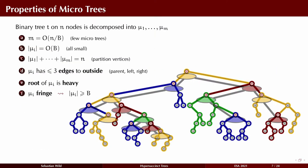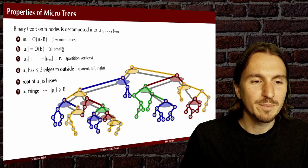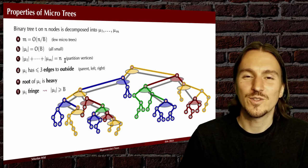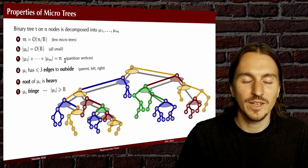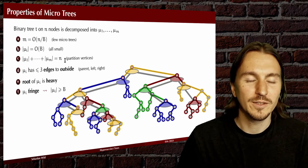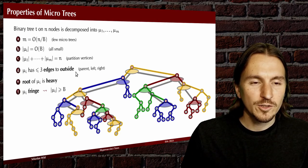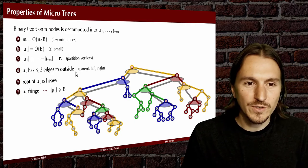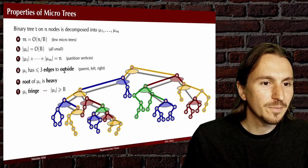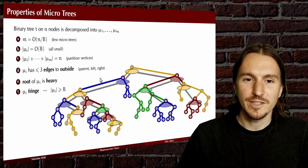We can use that and other insights from the algorithm to prove these properties of the tree decomposition. We have not too many micro trees. None of them is very big. They actually partition the nodes of the tree, unlike in the general case for ordinal trees. For binary trees, we get a partition. Every node is in only one of the components, exactly one of the components. Each component has three edges to the outside, a parent, left and right edge or fewer. And if you have a root of a micro tree, it's always a heavy node.